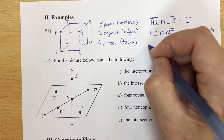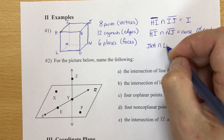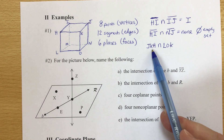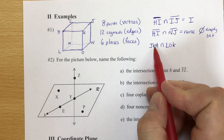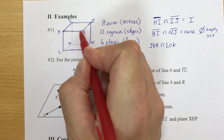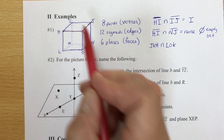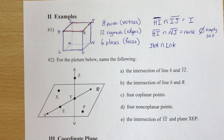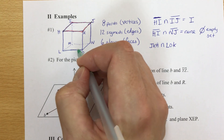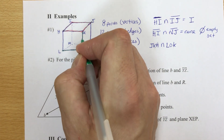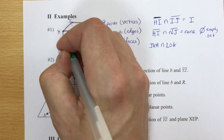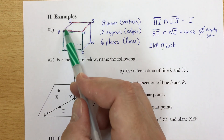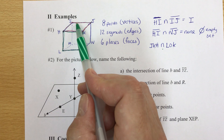Now what about planes? The intersection of plane JKH and plane LOK — we name a plane with three points, no commas. Tracing JKH: that's the top surface, with the fourth point being I. Tracing LOK: that's part of the front, with the fourth point H. So what's the intersection of the top and the front?